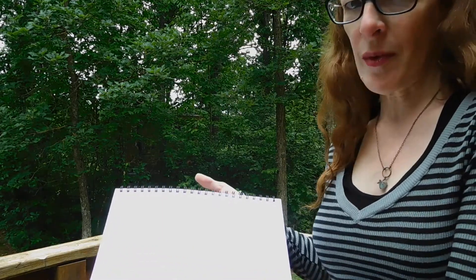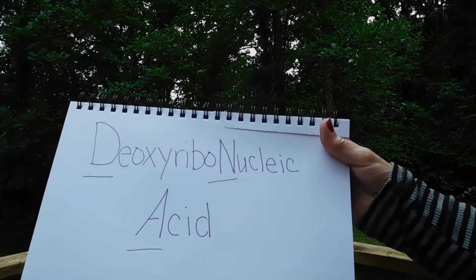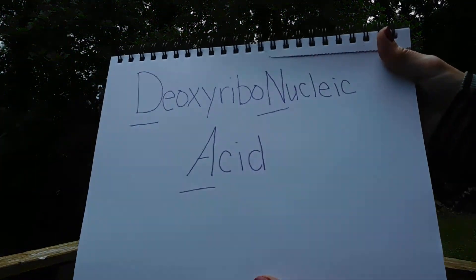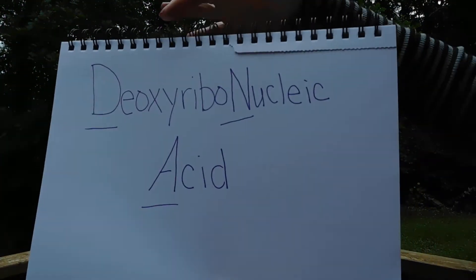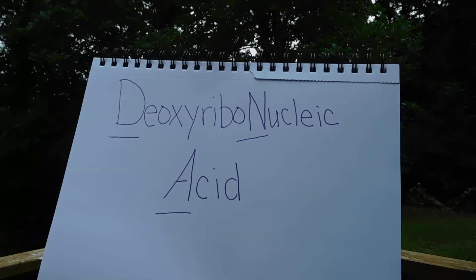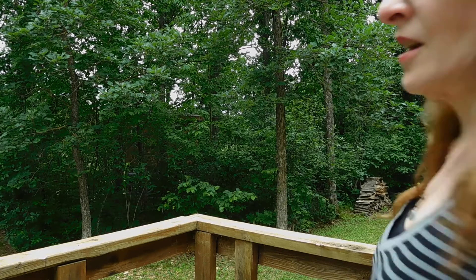And I am talking of course about deoxyribonucleic acid or DNA. So DNA kind of looks like a ladder that's been twisted. And the rungs of the DNA are made out of chemical bases.